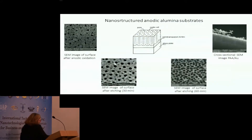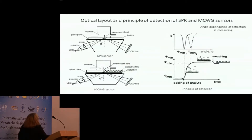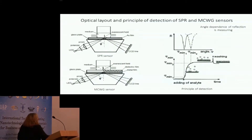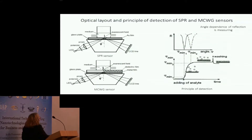Our substrates were developed for optical sensors on reflected light, known as metal clad waveguide sensors. Optically, these sensors are analogous to SPR sensors — sensors based on surface plasmon resonance. The angle of the minimum of the reflectance curve of the waveguide mode is monitored under changing of optical parameters of the environment or absorption of an additional layer of molecules on the surface of the waveguide.